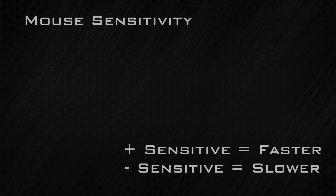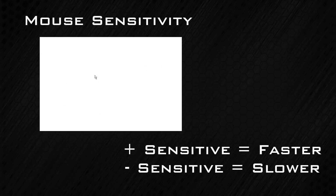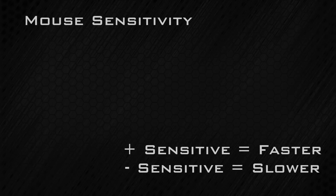Mouse sensitivity is pretty straightforward. If your mouse is highly sensitive, then the slightest hand movement will cause your cursor to quickly shoot across the screen. While a low sensitivity will make it so very large hand movements will result with your cursor slowly dragging across the screen.